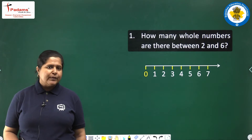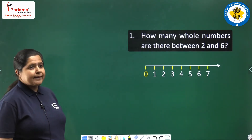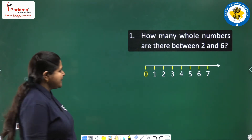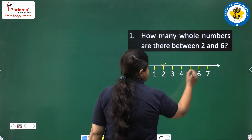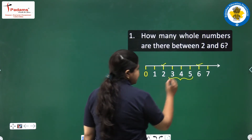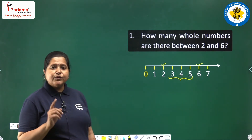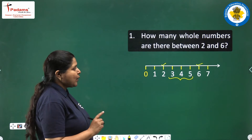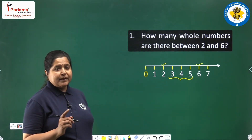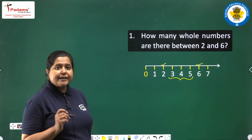Here is the first question: how many whole numbers are there between 2 and 6? Very easy — mark 2 and 6 on the number line and you can easily see that there are three numbers in between 2 and 6. You can easily count them; they are countable, or finite.